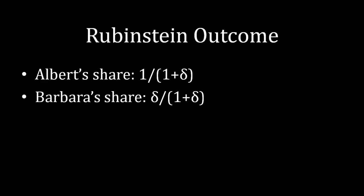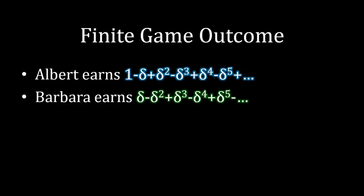What we want to do is compare this to what happens in a finite game with arbitrarily many offers. If we remember back to a few lectures ago, the finite game's outcome has Albert's payoff and Barbara's payoffs both oscillating back and forth. With one period Albert gets a payoff of 1, with two periods he gets 1 minus delta, with three periods he gets 1 minus delta plus delta squared, and so forth.